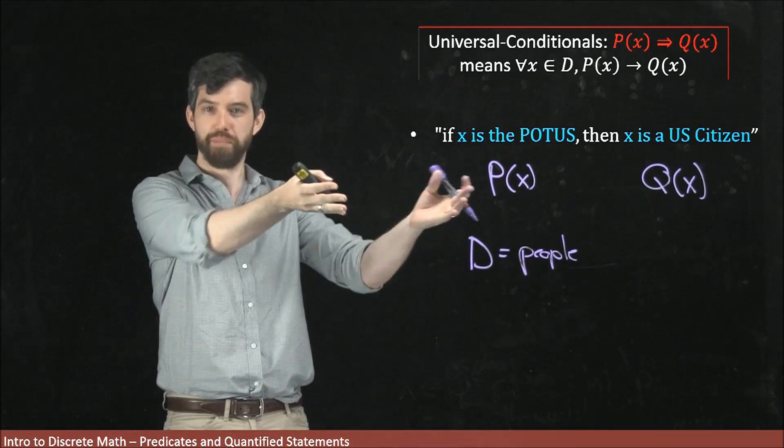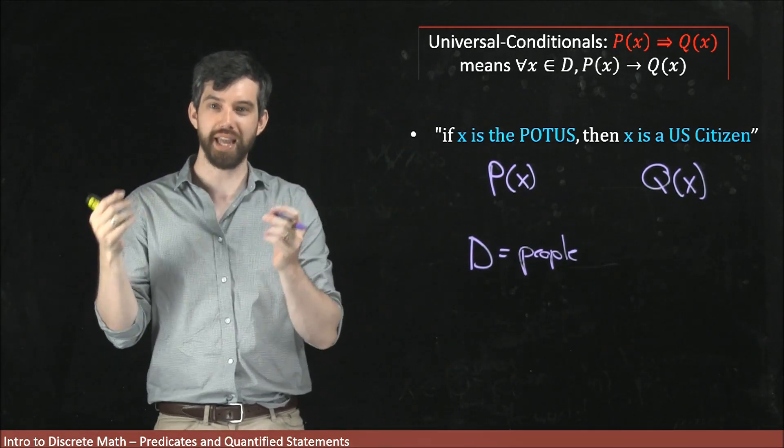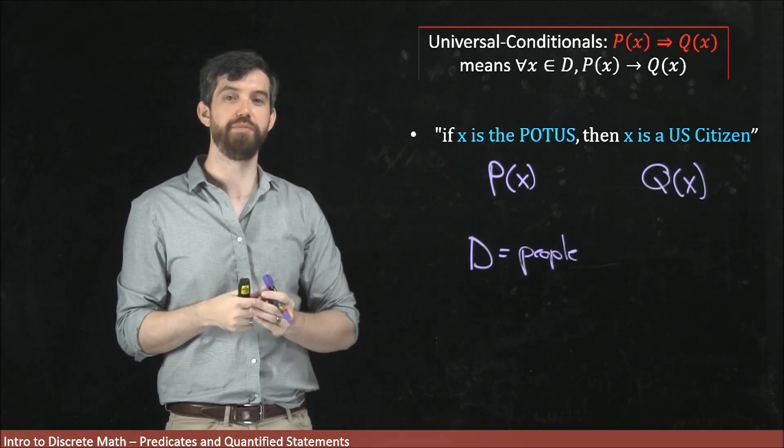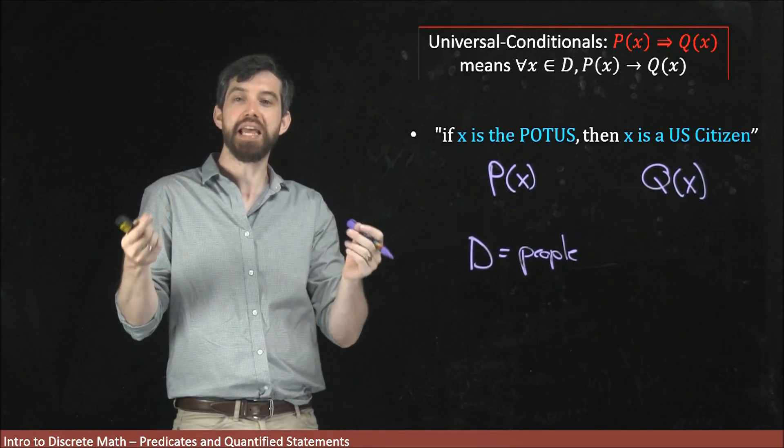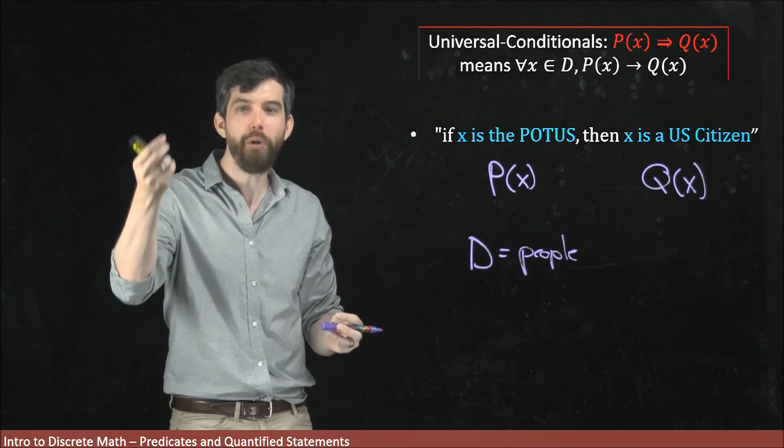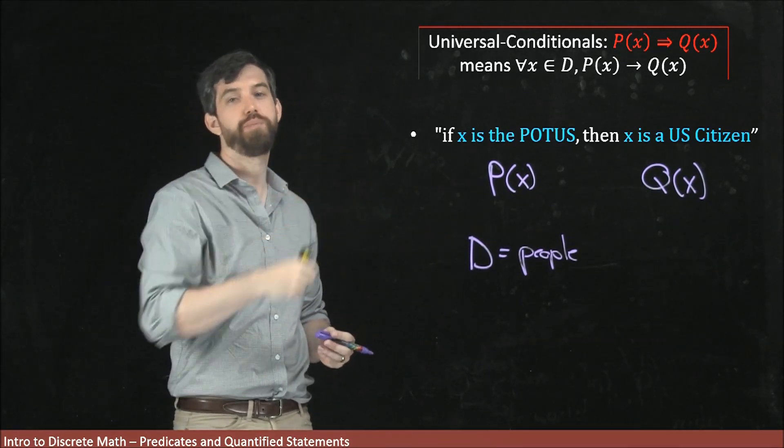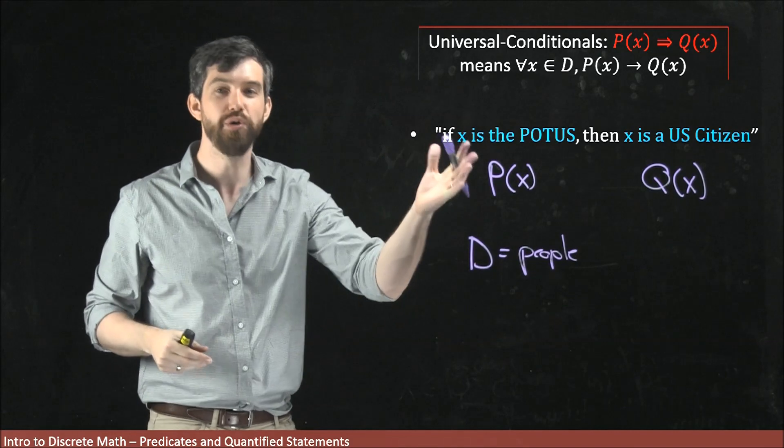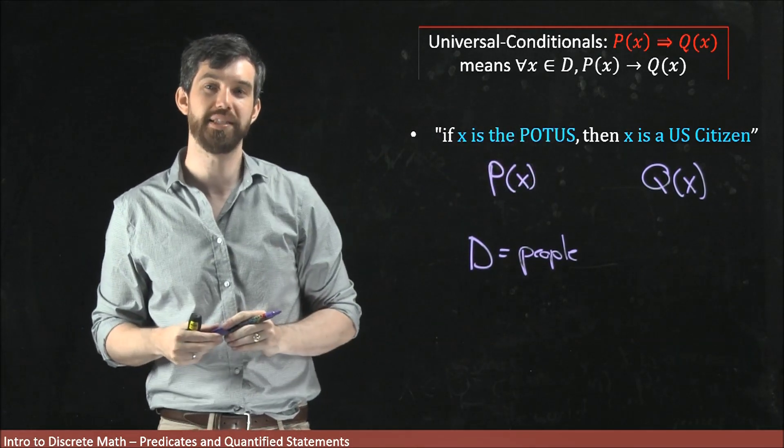Saying if some predicate is true, or in other words, if x has the property of being the President of the United States, is the same thing as saying for all people or every person who is the President of the United States, those people are US citizens.